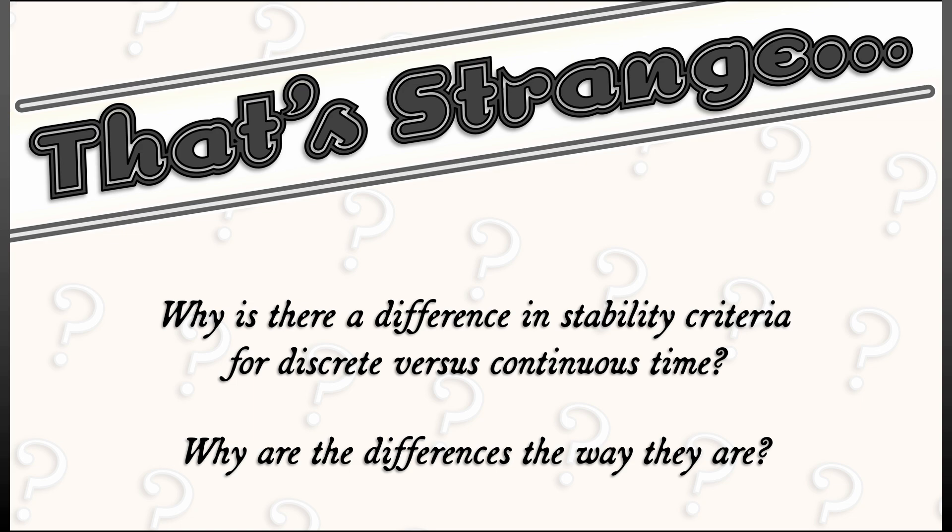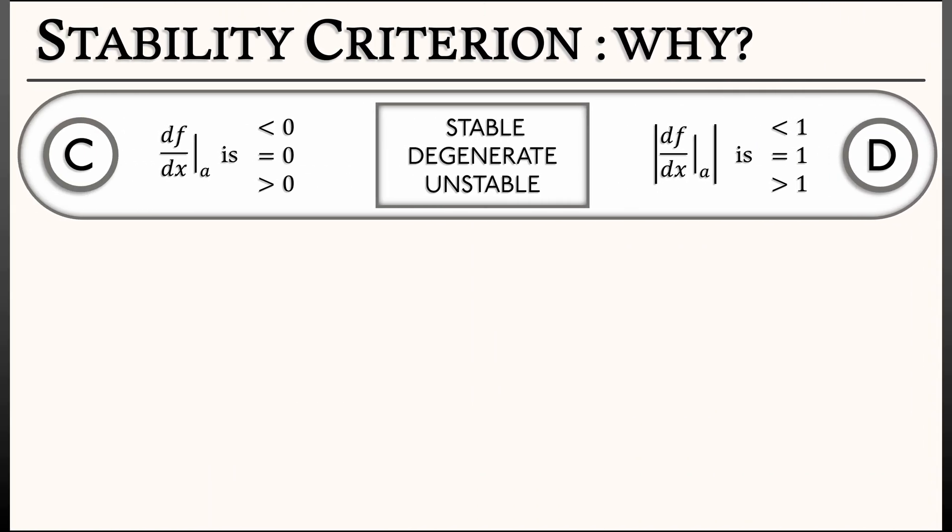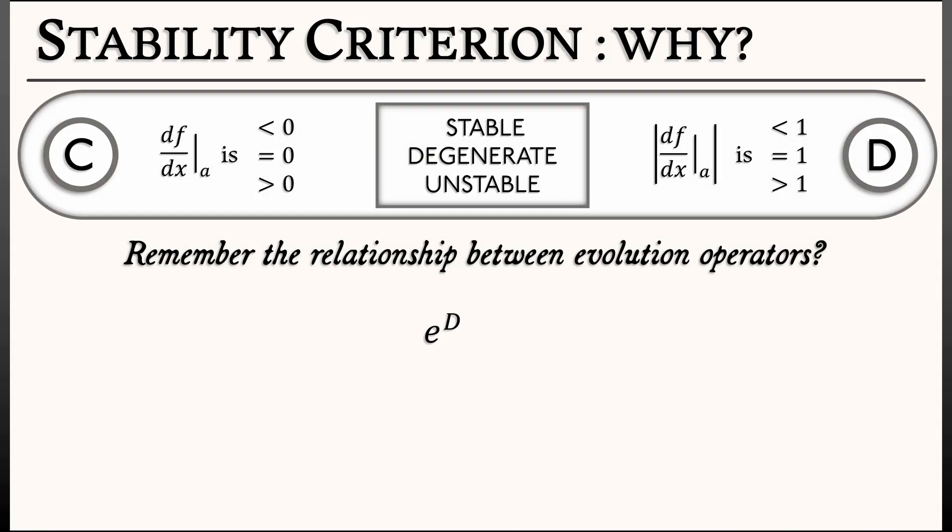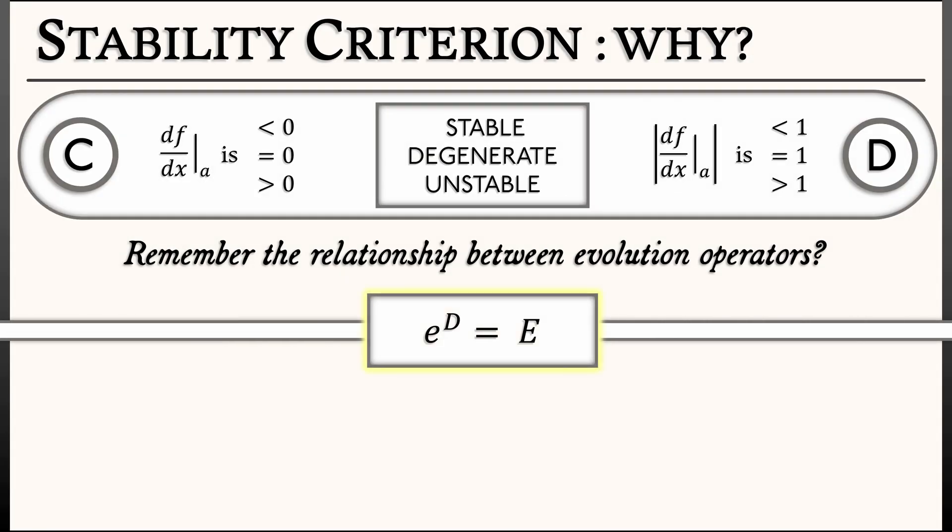Now, we've said before that one of the really important ideas that we want to get at is the relationship between continuous and discrete time dynamics. Do you remember what we showed earlier about the discrete versus continuous time evolution operators? That is, the differentiation operator D and the shift operator E? That's right. Now, I remember the shift operator E is the exponential of the differentiation operator D.